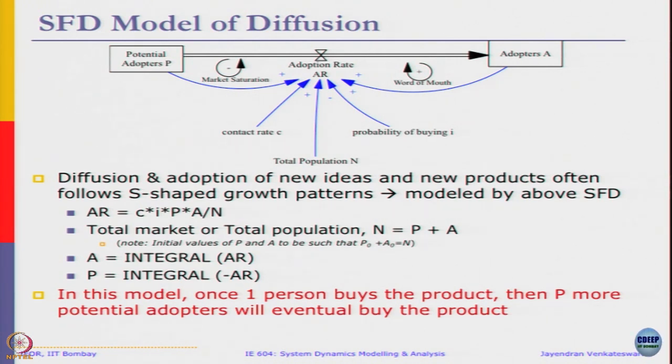The equations are shown. You can see AR is C into I into P into A by N. The total population is conserved, N is equal to P plus A. In this model, the key thing that you have to understand is as soon as one person buys the product, eventually everybody will buy the product.